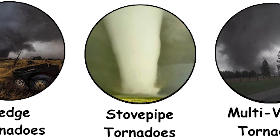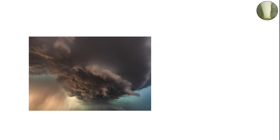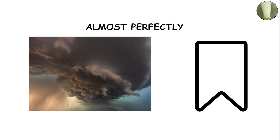Stovepipe tornadoes — perfect cylinders of destruction. Some tornadoes appear almost perfectly vertical, resembling a stovepipe. These are called stovepipe tornadoes, and they typically occur when a strong tornado maintains a consistent width from the cloud to the ground.